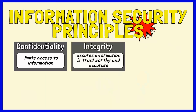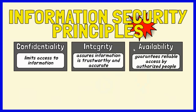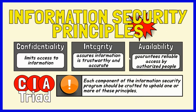The principles of Information Security encompass confidentiality, integrity, and availability. Collectively, these principles are known as the CIA triad. Each component of the Information Security program should be crafted to uphold one or more of these principles. Confidentiality is a set of rules that limits access to information. Integrity is the assurance that the information is trustworthy and accurate, and availability is the guarantee of reliable access to the information by authorized people.